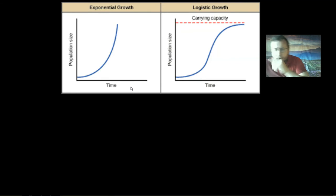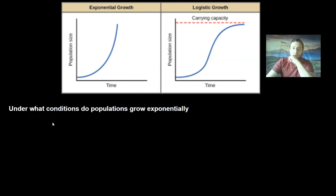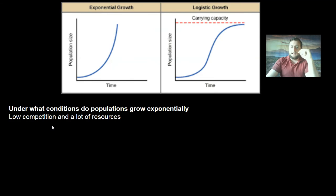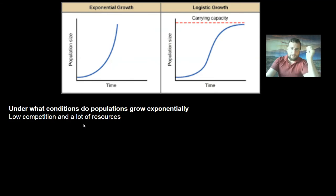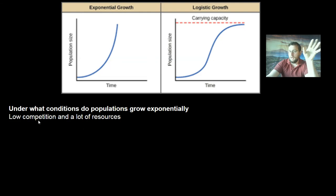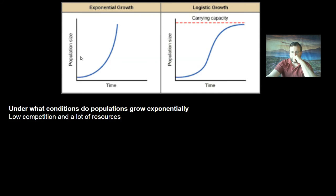But organisms can only grow like that under certain conditions. They can only do that if there's very low competition and a lot of resources. That basically is what we're going to talk about over the next two videos — the first one focusing on competition, and the next one focusing on other types of limiting factors.